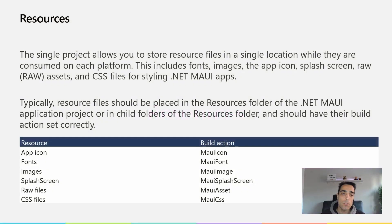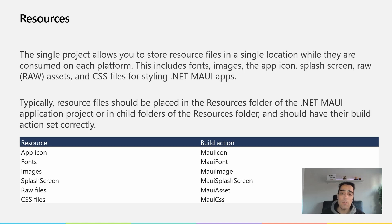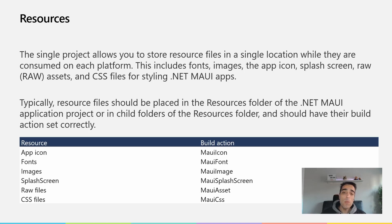The single project allows you to store resource files in a single location while being consumed on each platform. This includes several kinds of files like images — among them the application icon and the splash screen — and also font files, CSS files, raw assets, etc. Typically the resource files will be placed in the resource folder, with subfolders, and based on where we put each resource inside those subfolders, a different build action will be used.